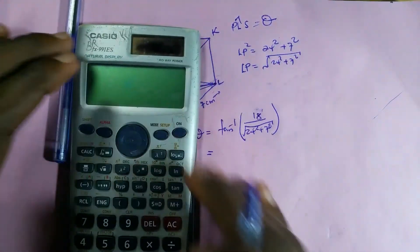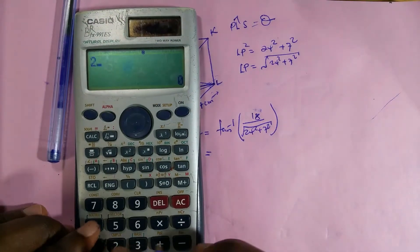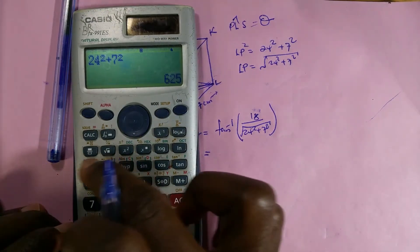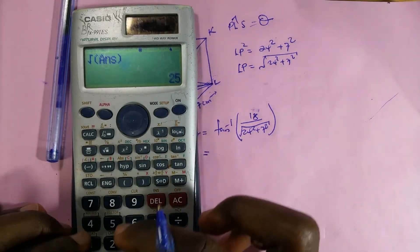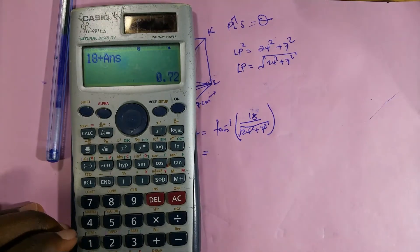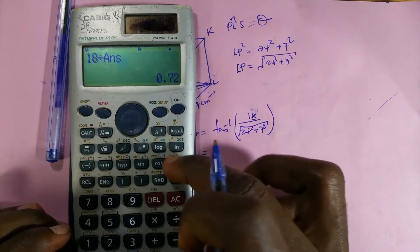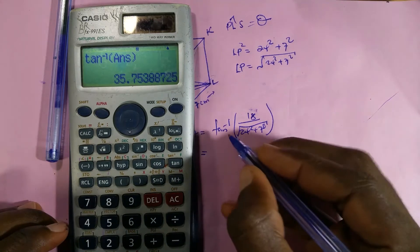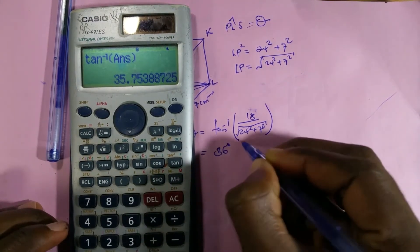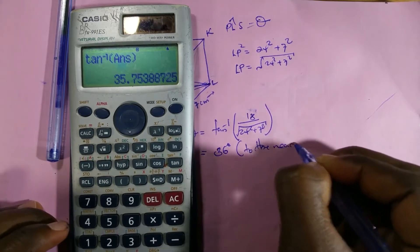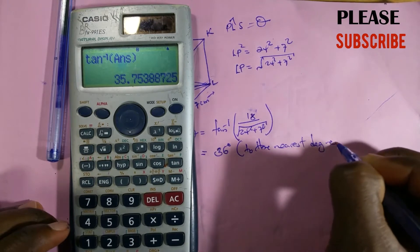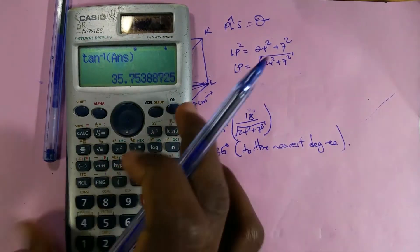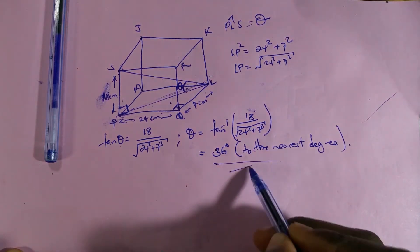Calculating: 24 squared plus 7 squared equals 576 plus 49, which is 625. The square root of 625 is 25. So tan(theta) equals 18 divided by 25. Taking arctan gives us 35.75 degrees, which rounds to 36 degrees to the nearest degree. That is the angle between line SL and plane PQLM.